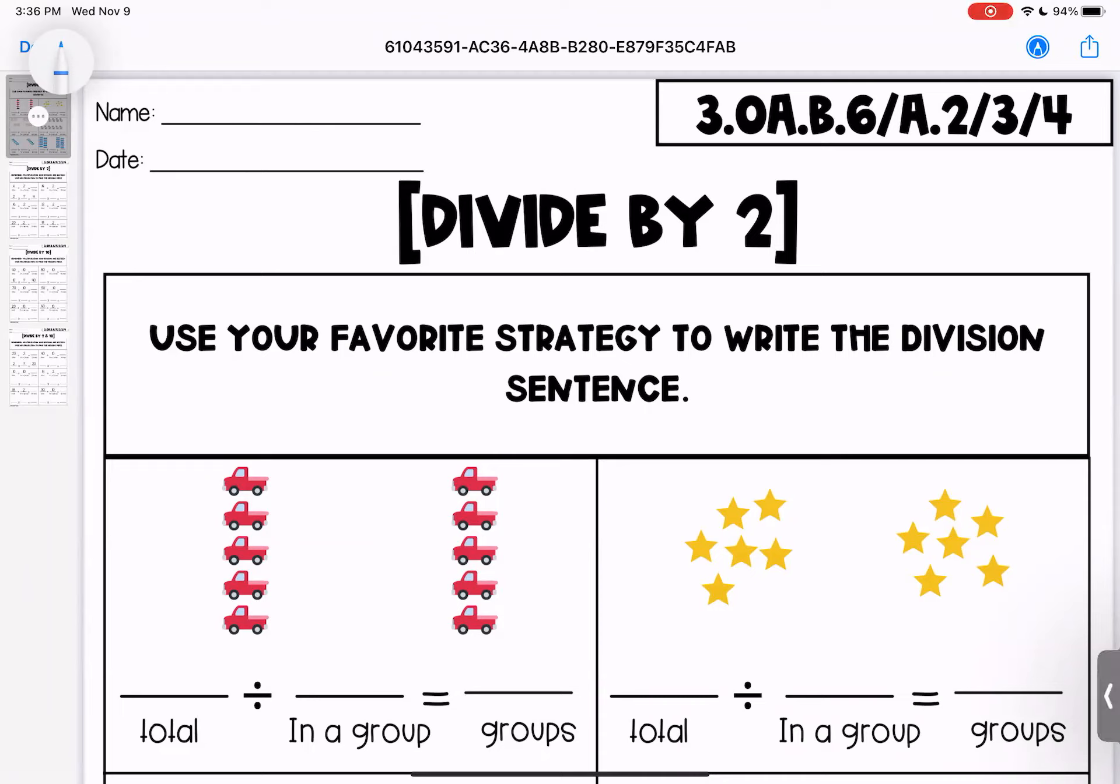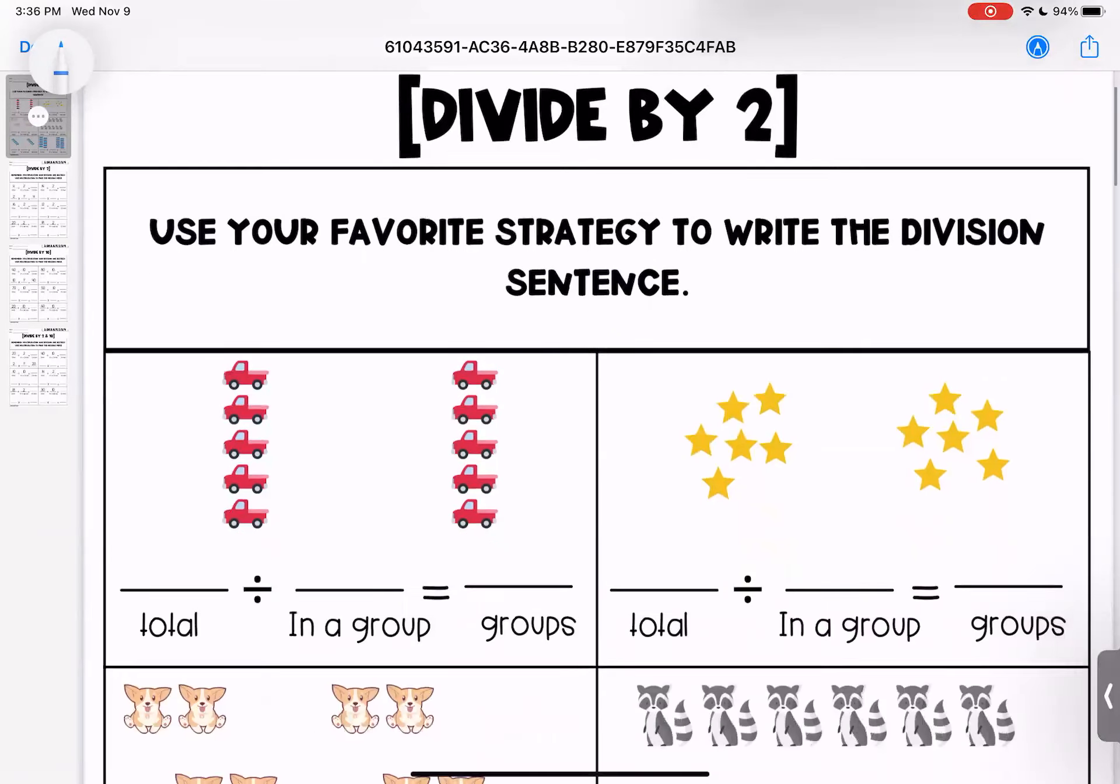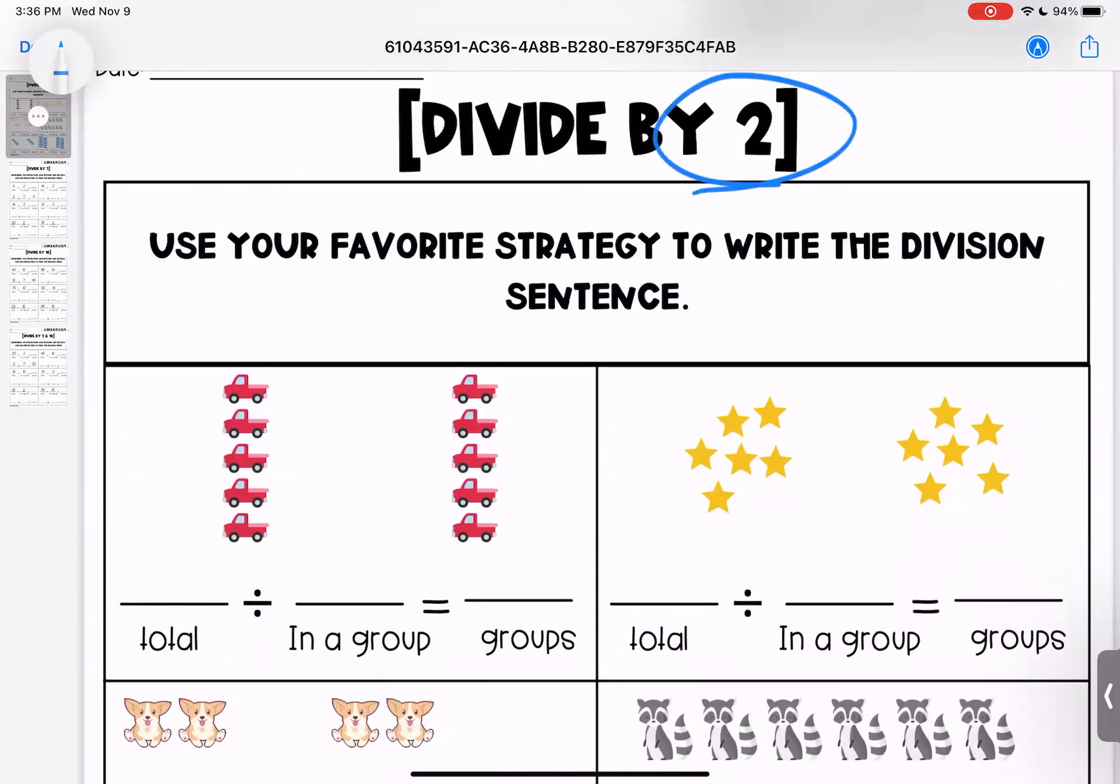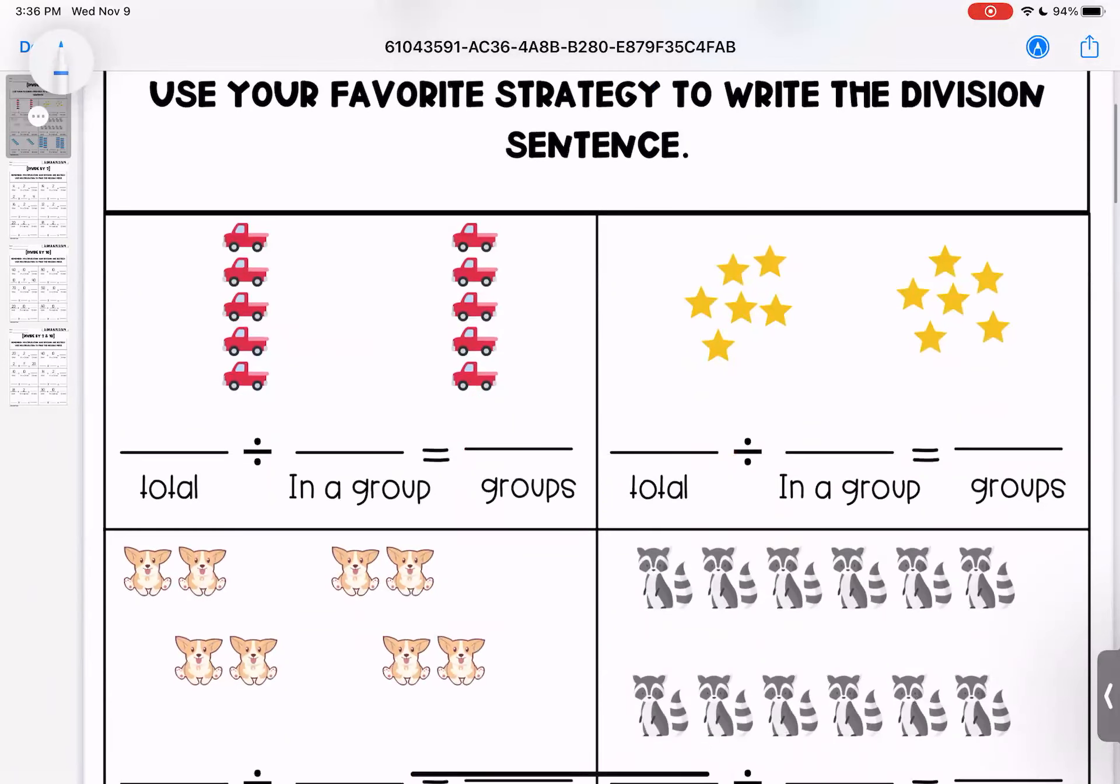So we are looking at our pictures to see if we can write what the division strategy is. Now we are, again, dividing by two. So when it's asking for how many are in a group, we're looking for two.